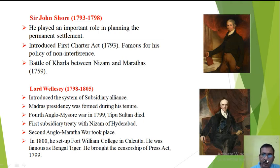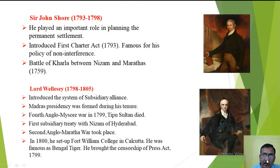Another important aspect of the subsidiary alliance was that local kings or princely kings were not allowed to take administrative decisions. They were not allowed to go to war with any adjoining kings without seeking permission. They were not supposed to make any treaties with other kings. For each and everything, they were bound to take the permission of the British Governor General. This was the subsidiary alliance.